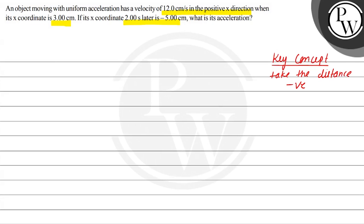What is the question? It says that an object moving with uniform acceleration has a velocity in the positive x direction when x coordinate. Let's take the origin here. This is the x-axis here, and here is the 3 centimeter point. After 2 seconds, where is it? This is the origin. Where is it? At minus 5 centimeters.